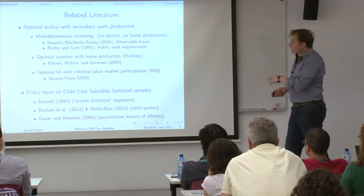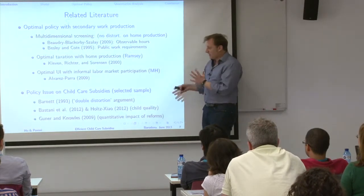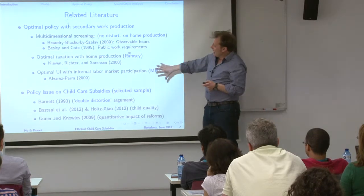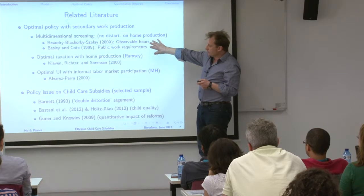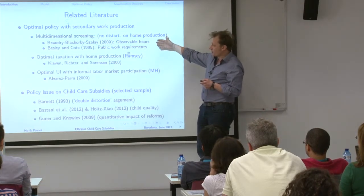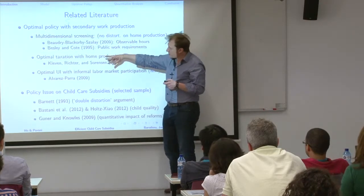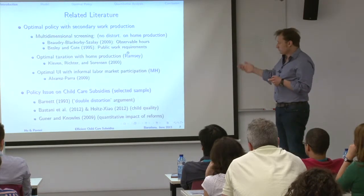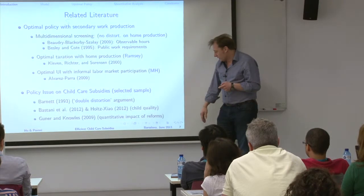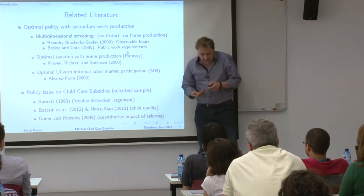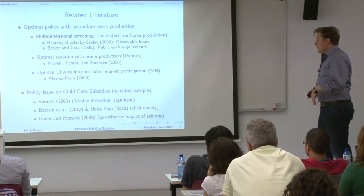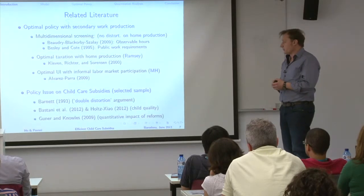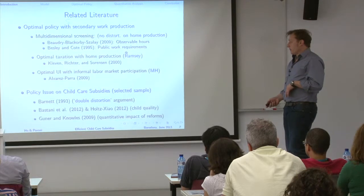Looking at the literature: there is really nobody starting this question with this optimal taxation framework. The only related models are those where you can think about secondary work production, studying different things. The closest one uses a very generic production function but with observable hours, so it is not really a full model. There are many quantification studies, but they do not use this optimal taxation framework, and I hope to show there is complementarity between the approaches.